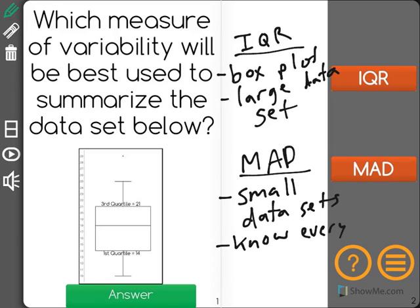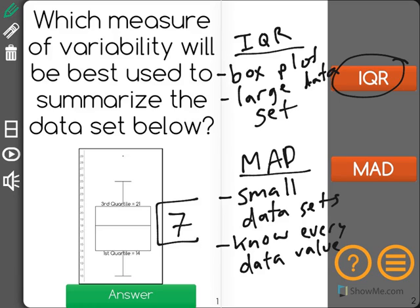So looking at what we have here, we have a box plot. As we can see in our notes, it's much better to find the IQR, since we already know the third quartile value is 21, and the first is 14, making our IQR 7. Very easy to find that.